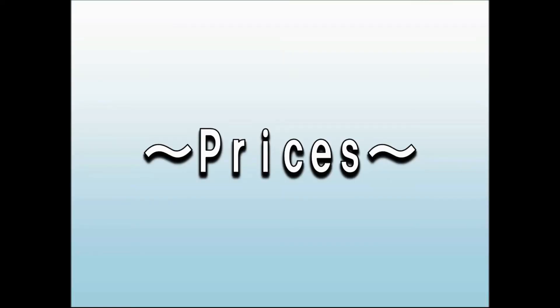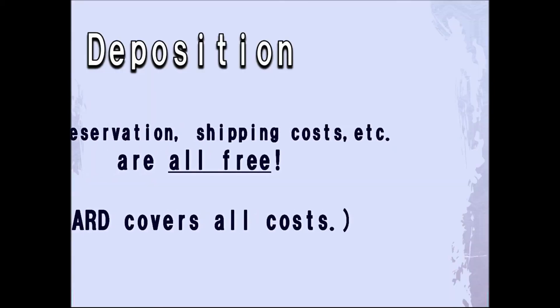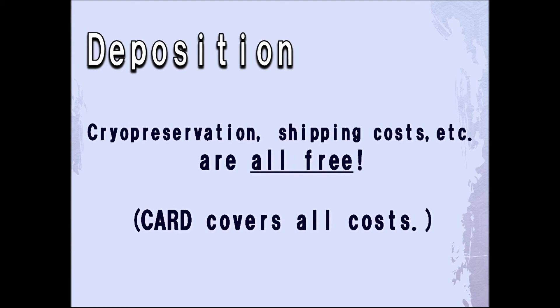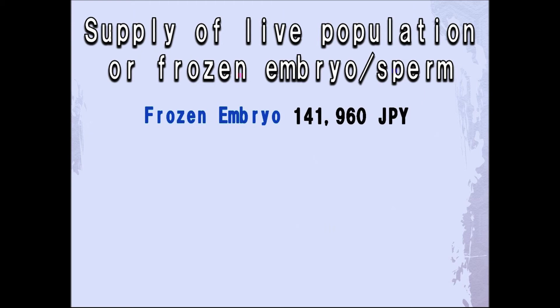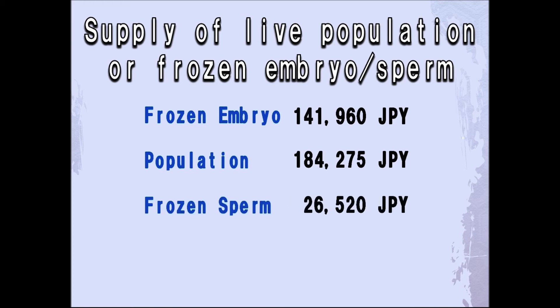Now, I would like to move on to discuss prices. Firstly, there are no charges whatsoever for deposition. This includes costs associated with cryopreservation and shipping — everything is paid for by CARD. For the supply of live population or frozen embryo or sperm, the prices are 141,960 Japanese yen for frozen embryos, 184,275 Japanese yen for mice population, and 26,520 Japanese yen for frozen sperm. Please note that these prices do not include shipping fees.